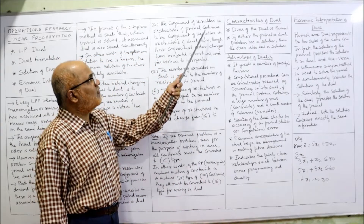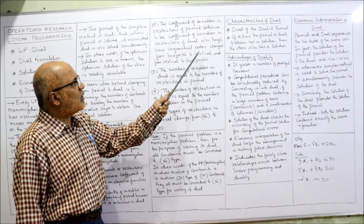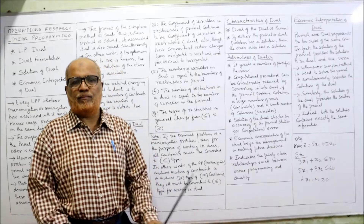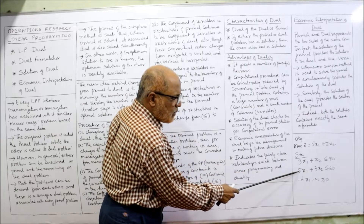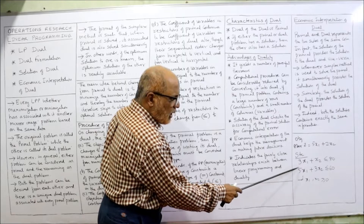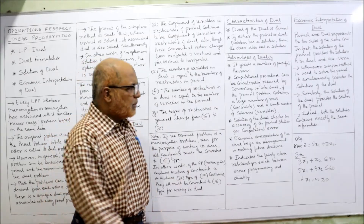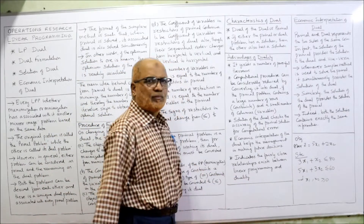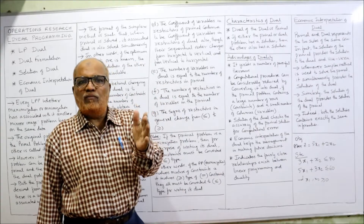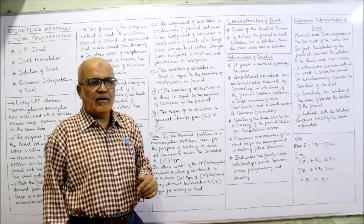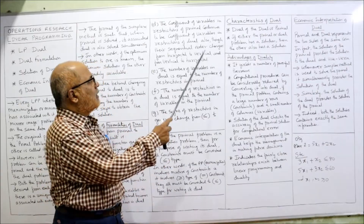Fourth effect: the coefficients of variables in the restrictions of the primal continue to be coefficients of variables in the restrictions of the dual, though their sequential order changes from horizontal to vertical or vertical to horizontal. The column 3 and 5 (from 3x1 and 5x1) becomes a row in the dual problem. Similarly, column 1 and 3 (from x2 terms) becomes a row. So columns become rows and rows become columns — coefficients remain the same but order changes.